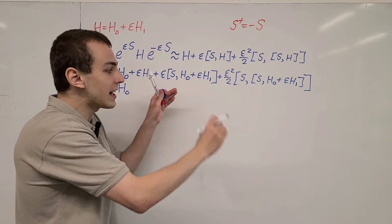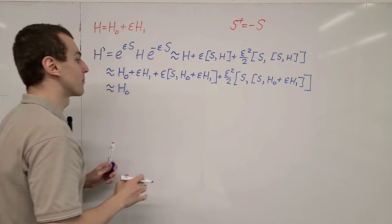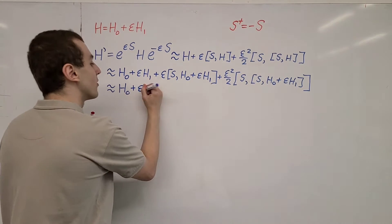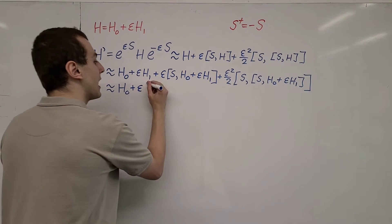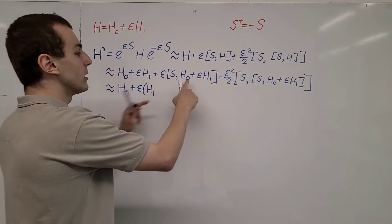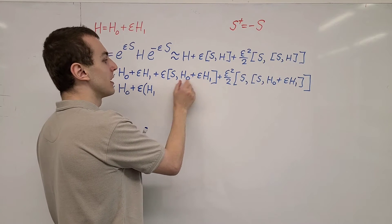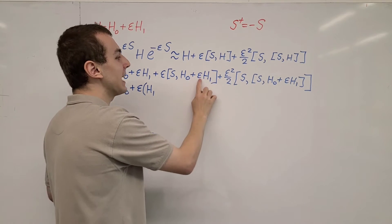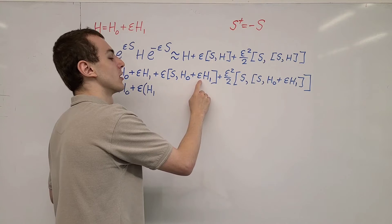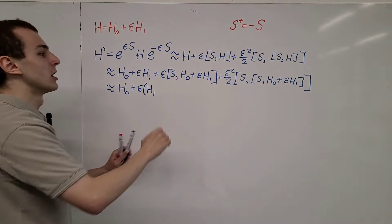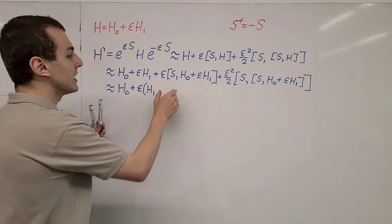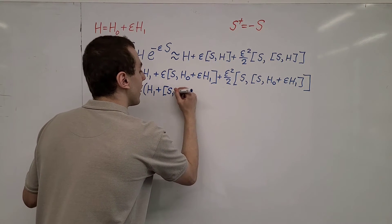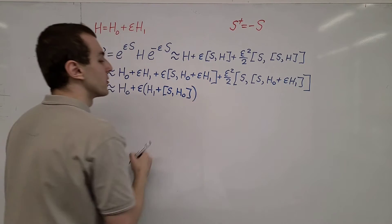For a diagonal matrix, you can just read off the diagonal entries, which is a lot more convenient to work with. H0 is the only zero order term. Now let's look at the first order terms — those with one power of epsilon. First we have H1. Then from the commutator, we have S and H0. If we split this commutator, we'd also get a term with epsilon times epsilon, which is small squared — so that contributes to second order. Thus H1 is only accompanied by the commutator of S with H0 at first order.